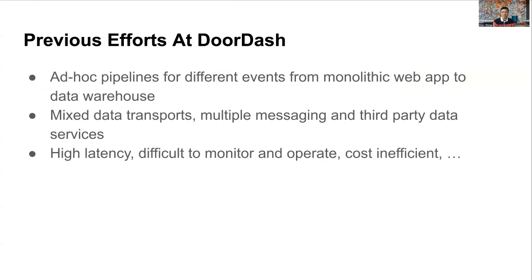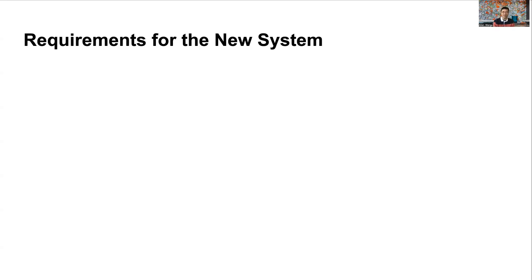Historically, DoorDash had a few data pipelines that get data from our legacy monolithic web application and ingest data into Snowflake. Each pipeline is built differently and can only handle one kind of event. They involve mixed data transports, multiple queuing systems, and multiple third-party data services, which make it really difficult to control latency, maintain cost, and identify scalability bottlenecks. So we started to rethink this approach and decided to build a new system to replace those legacy pipelines and address future event processing needs.